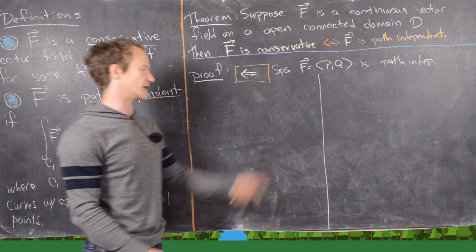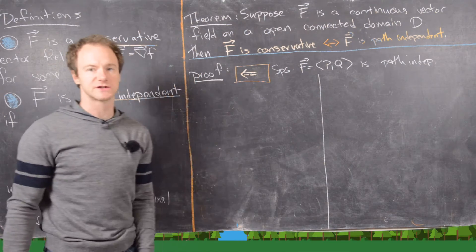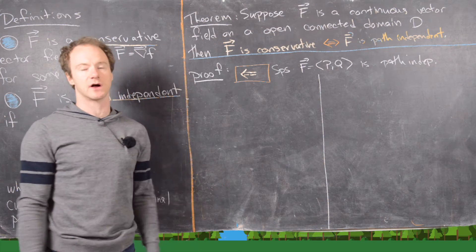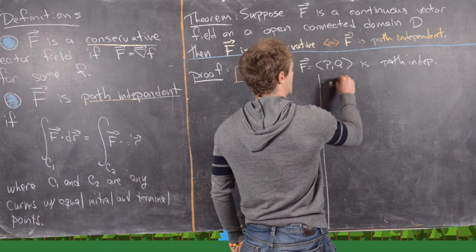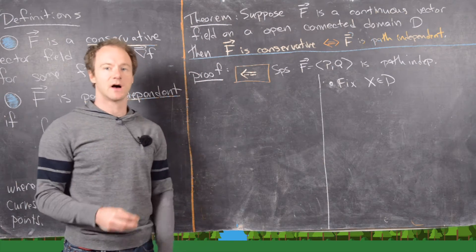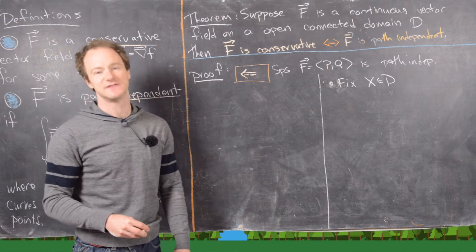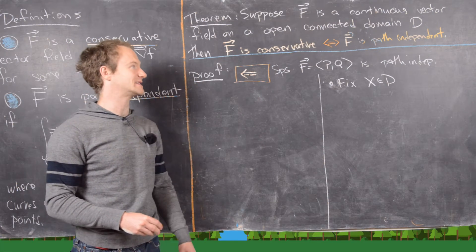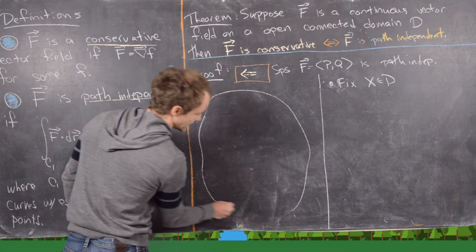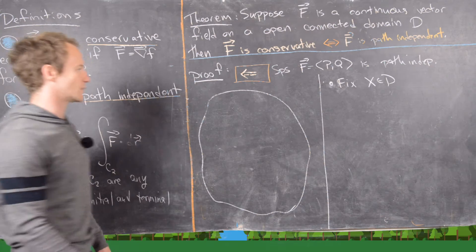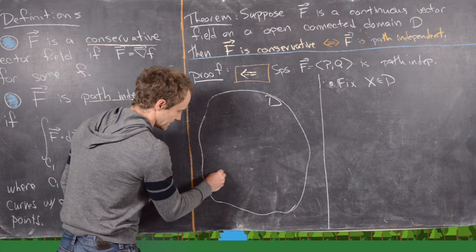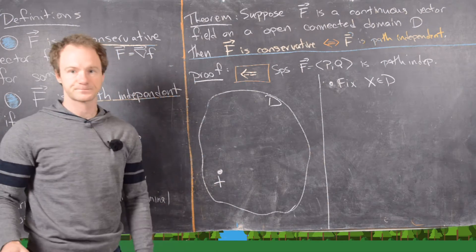The board is partitioned into two sections: one for the proof outline in words and one for drawings. First, fix a point capital X inside the open connected domain D. Drawing D as a blob shape, capital X is our fixed point inside it.